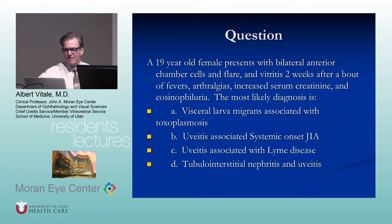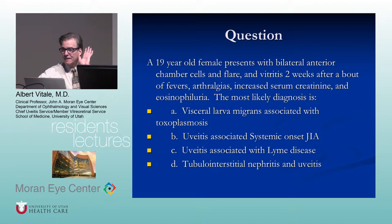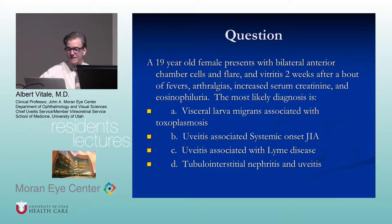A teenager presents with bilateral anterior chamber cell and flare, vitritis, fever, arthralgias, increased serum creatinine, and eosinophiluria — a 19-year-old female with a little vitritis. Think TINU. JIA can be bilateral but usually not associated with high fevers and eosinophiluria. TINU is associated with fevers, arthralgias, and increased serum creatinine. Unlike JIA, TINU uveitis is usually symptomatic and can be quite severe.